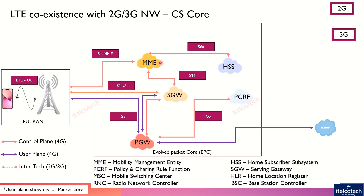In the LTE architecture, which is primarily a packet network, we have the packet core network with multiple entities: the Mobility Management Entity (MME) for control functions, the HSS which contains subscription-related data and helps in authentication in conjunction with the MME, and then the Serving Gateway, PDN Gateway, and PCRF, which handle session creation and enable Quality of Service for the user.